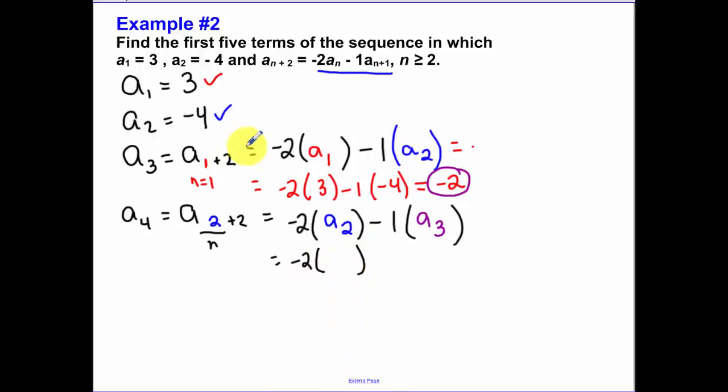So now it's just a matter of plugging in. a sub 2. a sub 2 is negative 4. Minus 1 times by a sub 3. a sub 3 was a negative 2. So simplifying that guy out, we get a 10.